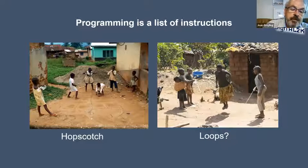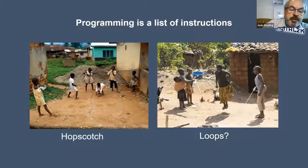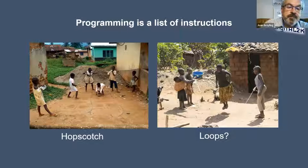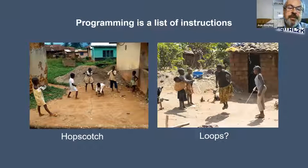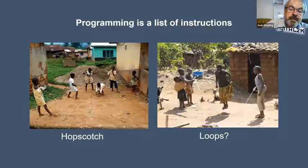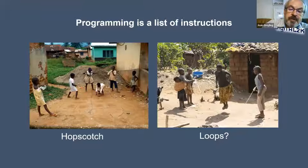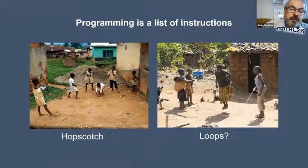We've done some work on the best unplugged ways to teach learners programming. The first important thing is: what is a program? It's a list of instructions. The best way I've found — having done training all across the country with about 1,000 teachers — is to introduce them to games that kids play. Two examples: hopscotch, which is clearly a list of instructions, and rope skipping, where if you watch closely, people definitely apply some loops — there's repetition and pattern.